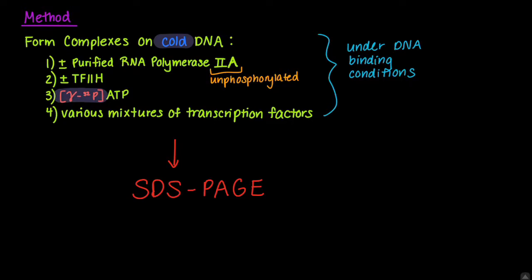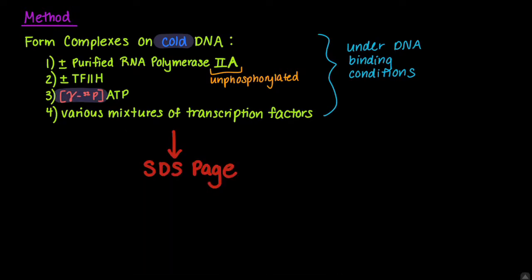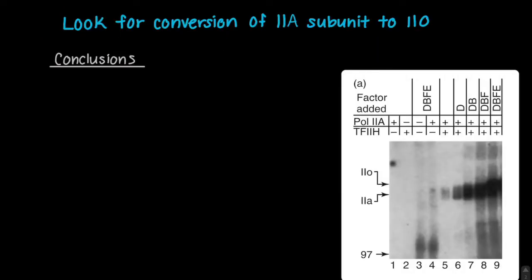From the previous diagram shown, the 2O subunit is quite large at around 200 kilodaltons. In this assay, we will be looking for the conversion of the 2A subunit to the 2O subunit. This will be visualized by the phosphorylation of the 2A subunit at around 200 kilodaltons.